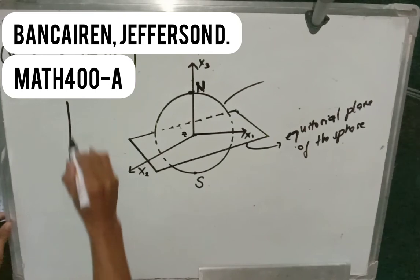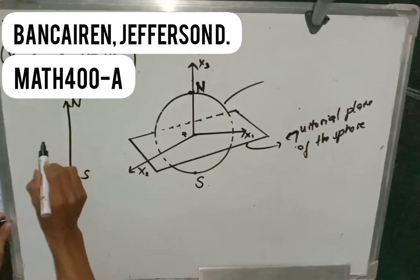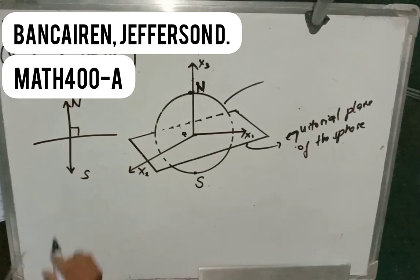So this is the N and S, line N to S, and then this is our equatorial plane. So as you can see, they form a right angle, so this is why the line that passes through N and S is exactly perpendicular to the complex plane.